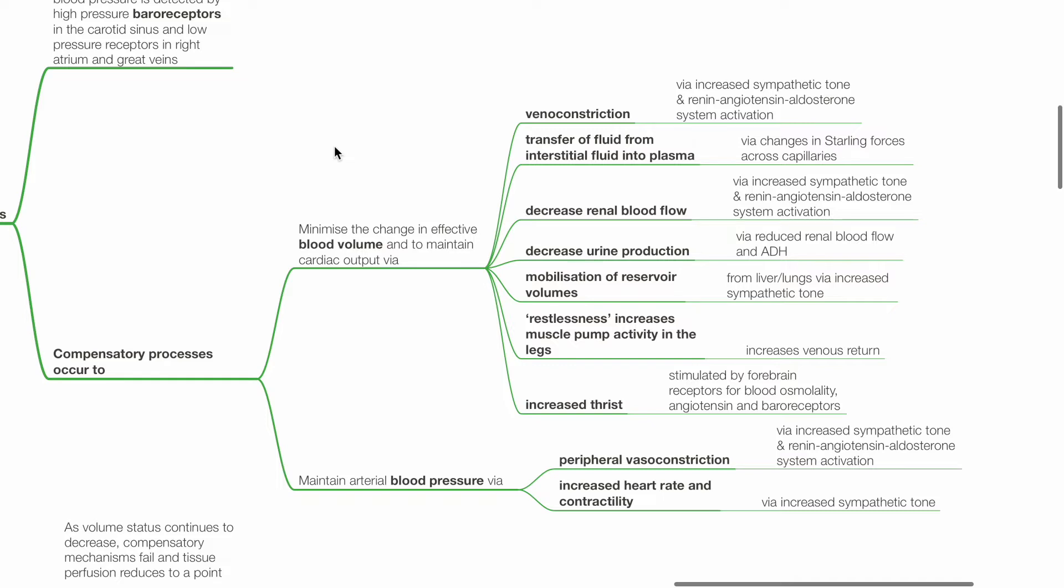Blood volume and cardiac output is maintained by venoconstriction, increased sympathetic tone and RAAS activation, transfer of fluid from interstitial fluid into plasma via changes in Starling forces across capillaries, decreased renal blood flow via increased sympathetic tone and RAAS activation, decreased urine production via reduced renal blood flow and ADH actions, and mobilization of reservoir volumes from the liver and lungs via increased sympathetic tone and alpha-1 agonism.